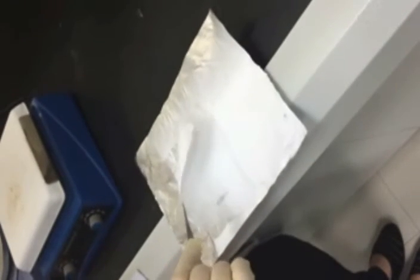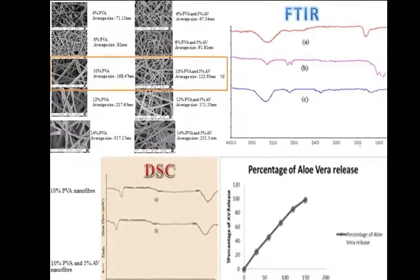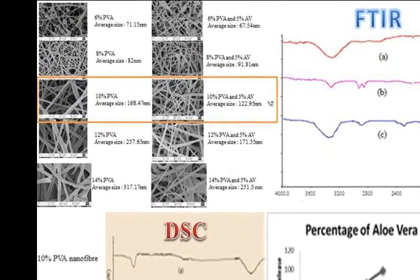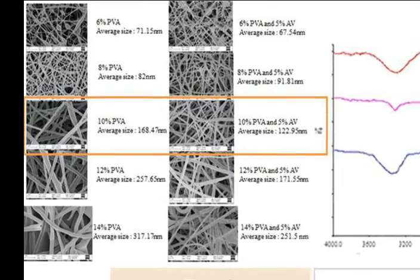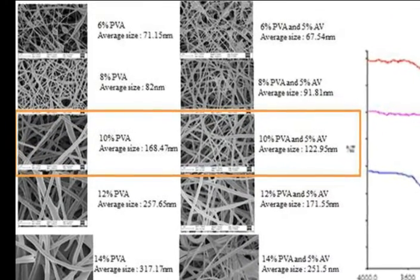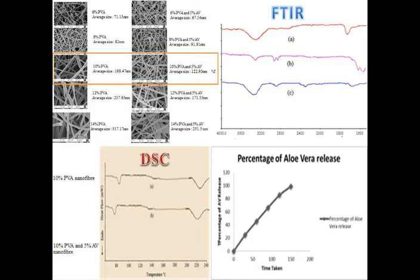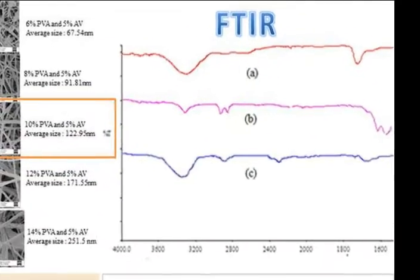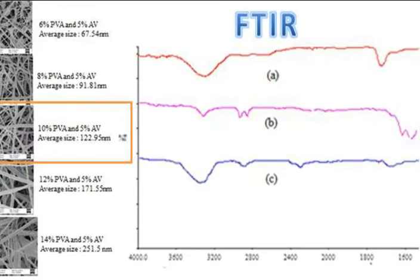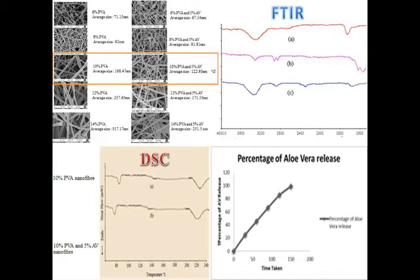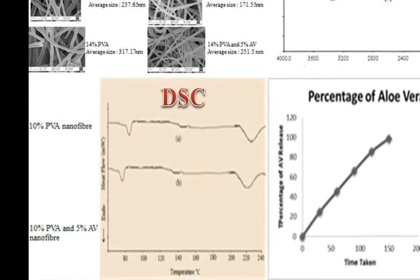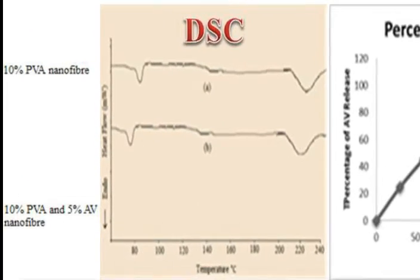This is how the PVA and aloe vera membrane is formed. After the membrane was done, it shows the overall results. The image on the upper left side shows a cylindrical, smooth, and longitudinal shape of nanofiber, whereas the FTIR result confirmed the presence of aloe vera in the PVA nanofiber. From the lower left side of the result, we can see the differential scanning calorimetry shows the presence of aloe vera as the glass transition shifts from 81 degrees to 76 degrees.